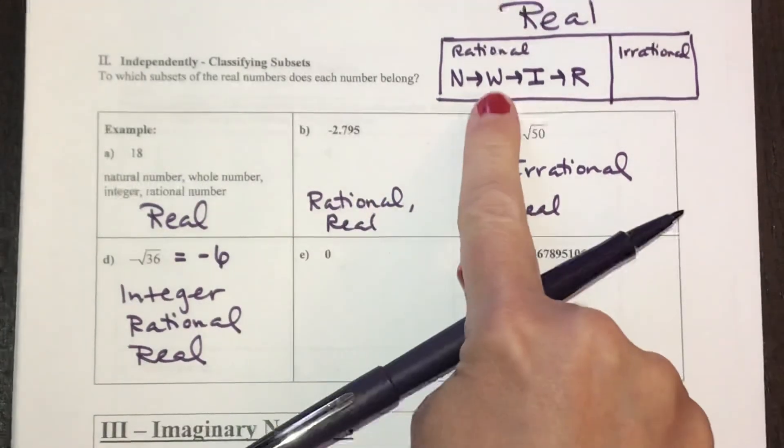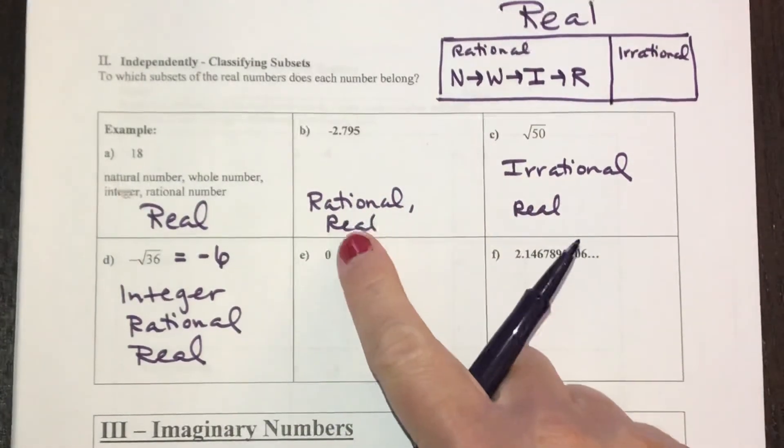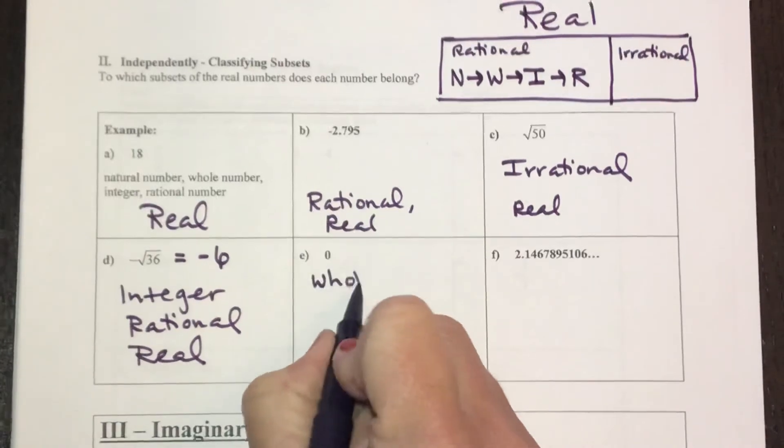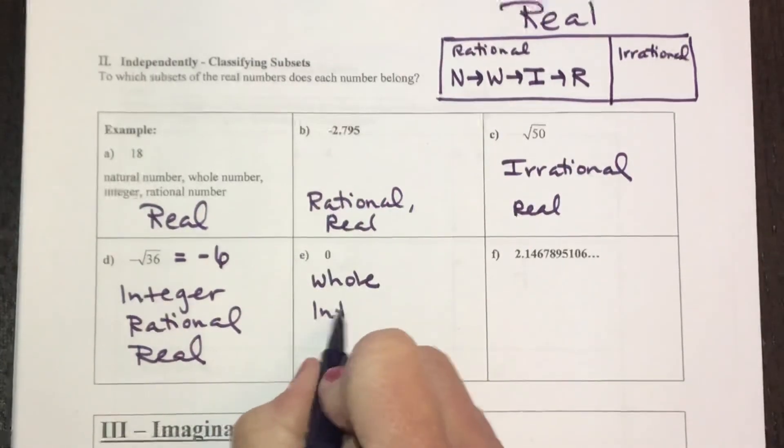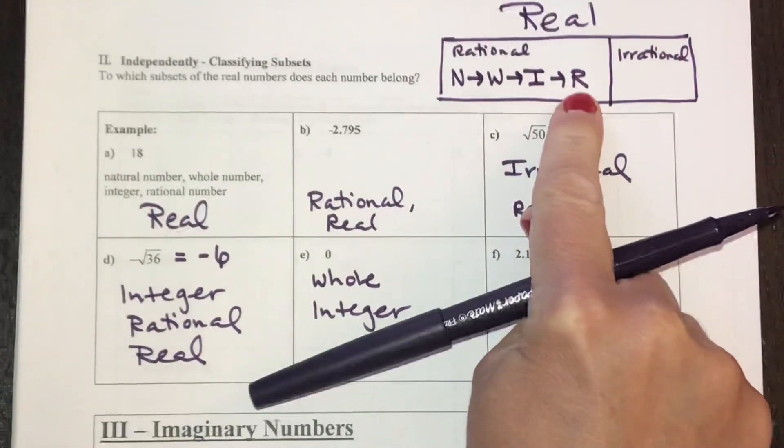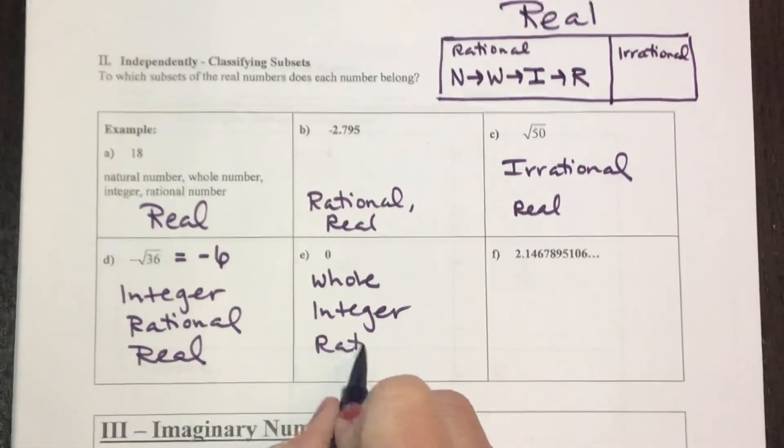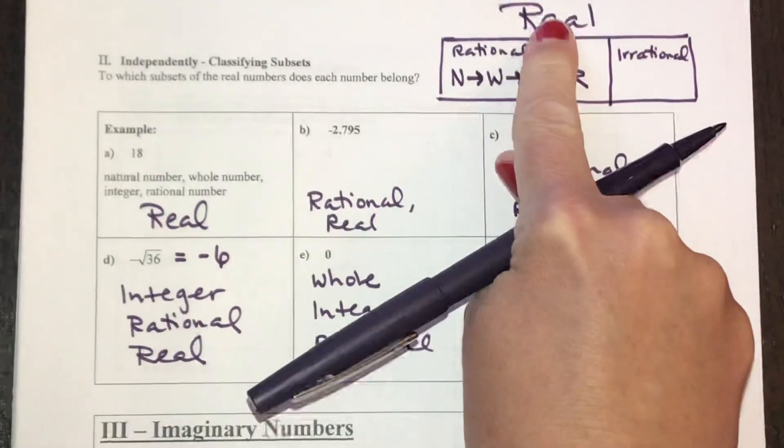The number zero starts with whole. Zero is a whole number, which means it is also an integer, which means it is also rational, and it is also a real.